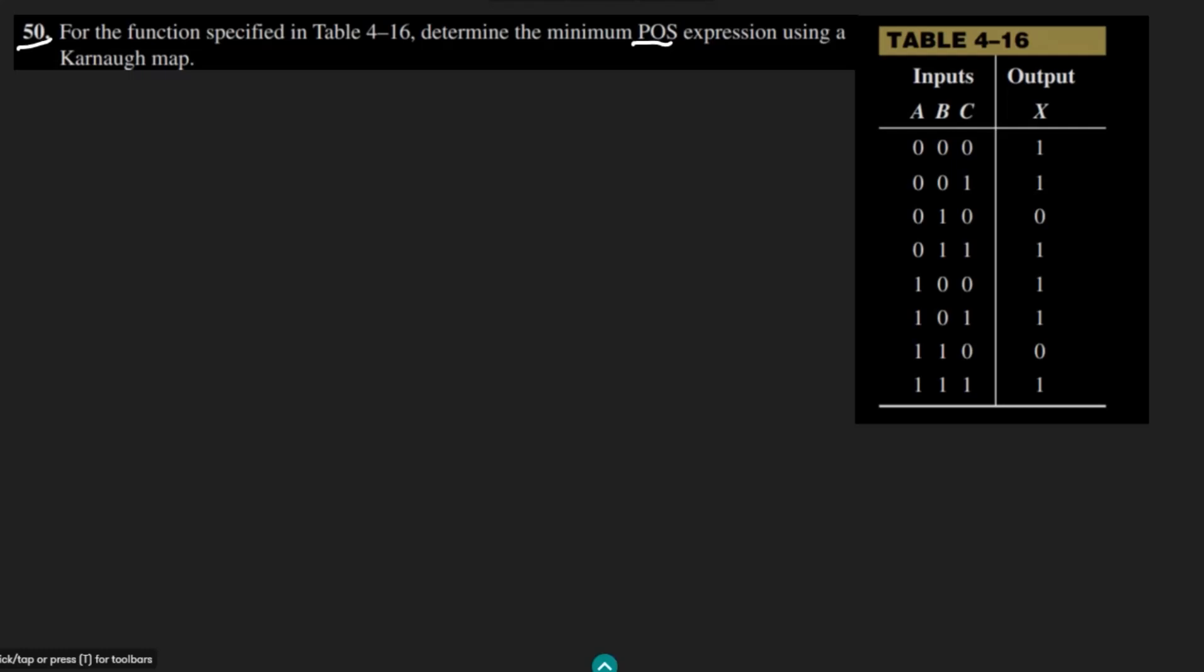As we have three variables here, let me first draw the Karnaugh map for the three variables which are A, B, C. So A, B will be here.